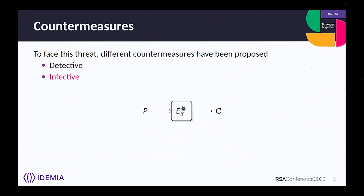Another family is called 'infective countermeasures.' Here we modify the algorithm slightly so that when no fault is applied, the correct ciphertext is output. But if a fault is applied somewhere in the process, its effect is amplified and infects all parts of the ciphertext output. The faulty ciphertext is still released to the attacker, but he cannot use it to recover the key — that is the purpose of infective countermeasures.